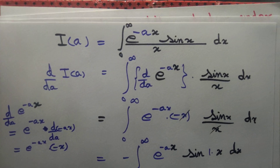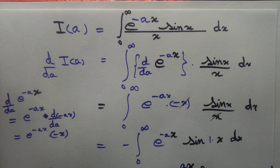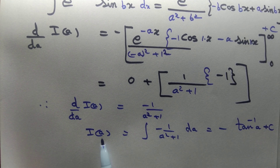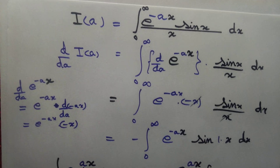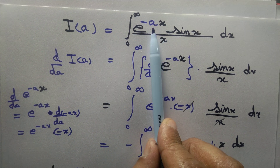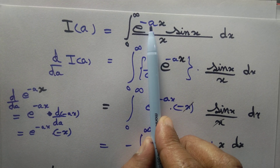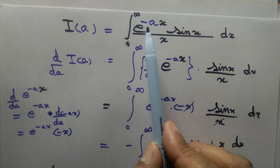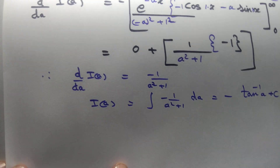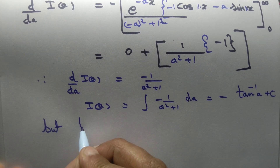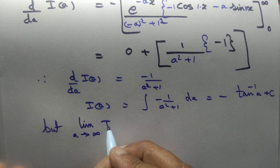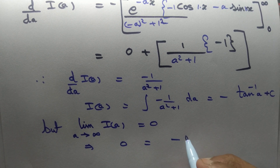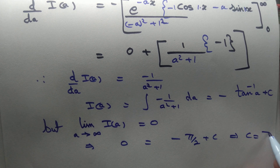To determine the constant of integration, we need to look at I(a) and find a value of a for which we know the integral. It is very difficult to compute directly, but if a is very large, e^(-ax) is very small. Taking the limit as a → ∞, I(a) → 0. So: 0 = −tan⁻¹(∞) + C = −π/2 + C, giving C = π/2.